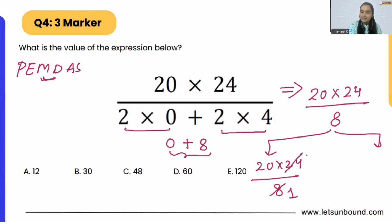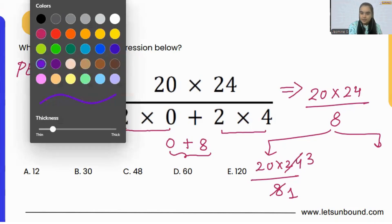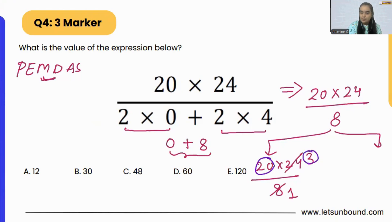Because I know 8 times 1 is 8 and 8 times 3 is 24. Now we are just left with 20 times 3, which is 60. So our answer is 60.